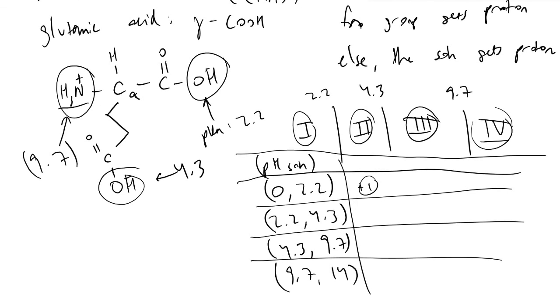If we increase the pH above 2.2, this carboxylic acid here will donate its proton to the solution and take on a negative formal charge. This would lose its proton, take on a negative charge, and this carboxylic acid on the R group would remain protonated, contributing a zero charge. Therefore, the charge of your molecule at pH 2.2 to 4.3 will be equal to 0. This would be the isoelectric point of glutamic acid.